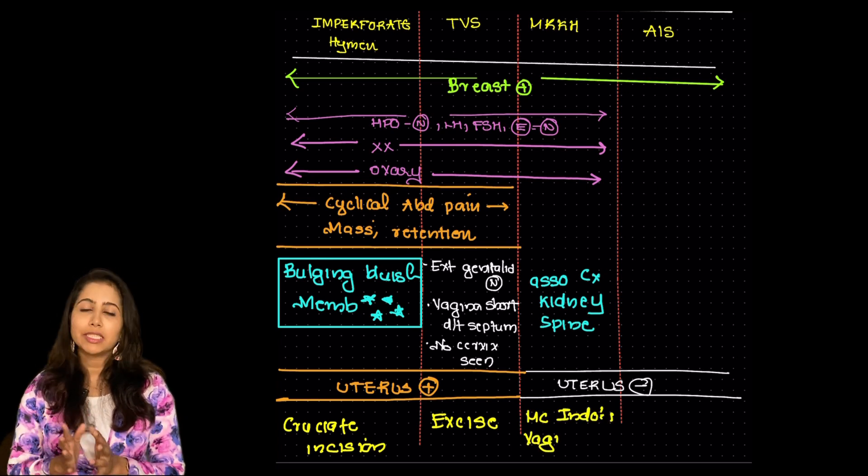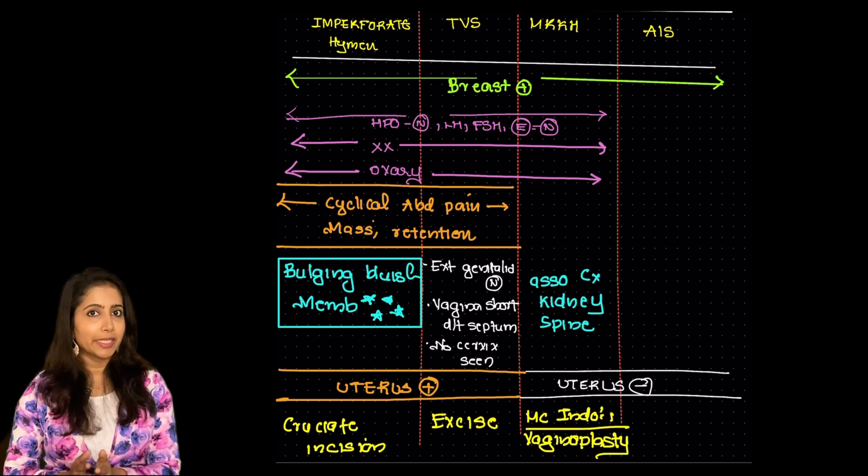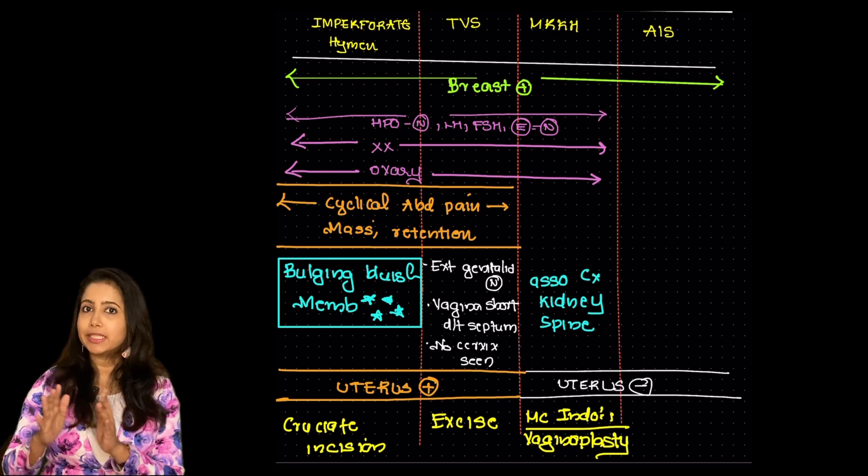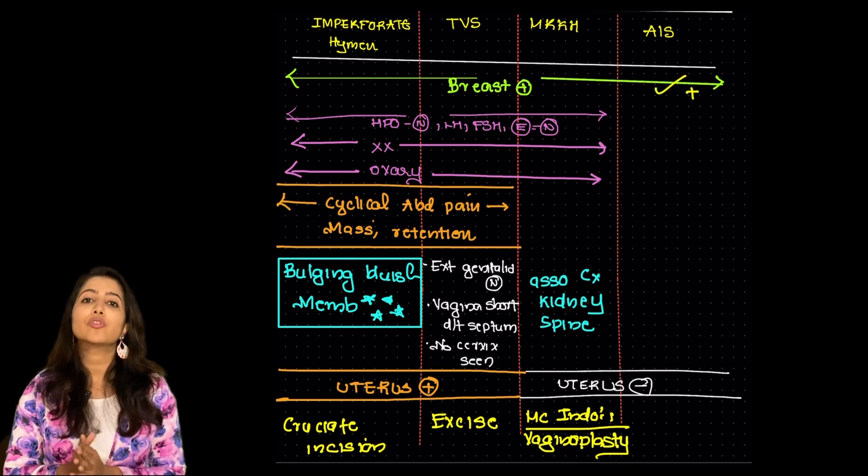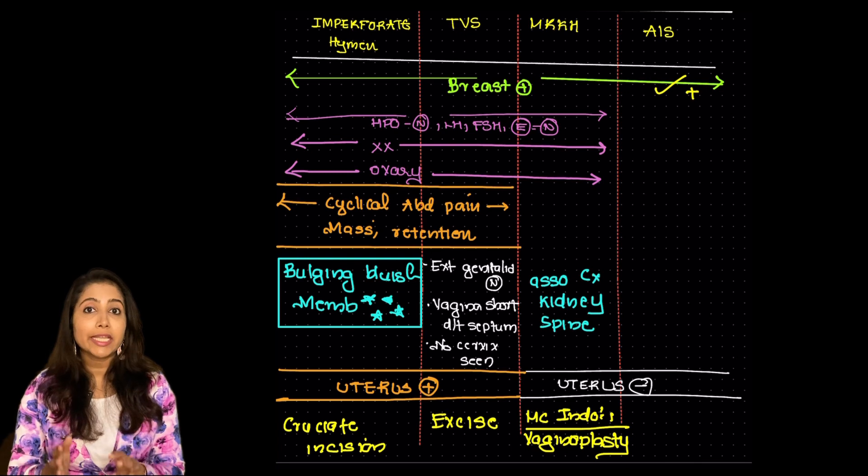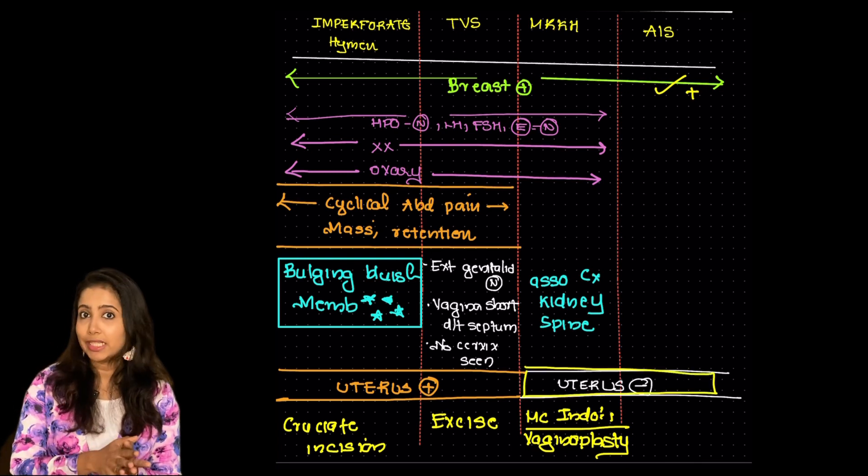What about androgen insensitivity syndrome? So in this as well the secondary sexual characters are normal like the others. The uterus is absent like the MRKH syndrome but the problem is that the karyotype is XY that is they are genetically males.